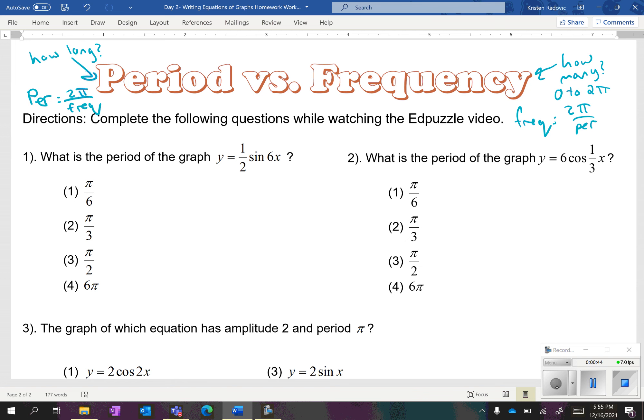Basically, if you have one, two pi divided by whatever you have is the other. Now, when it comes to periods and frequencies, we don't see the period in the equation. We only see the frequency in the equation, and the frequency is going to be attached to the x.